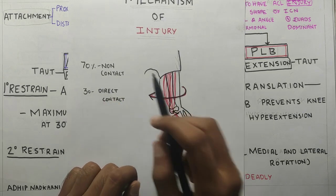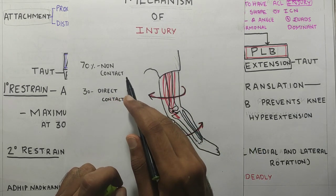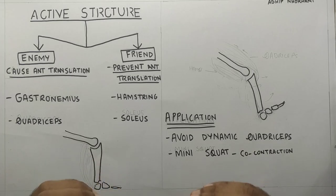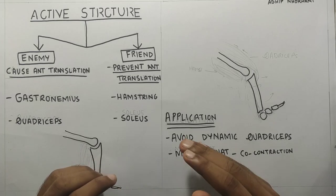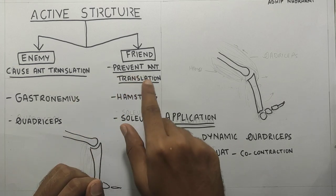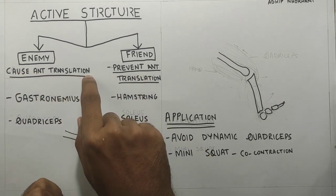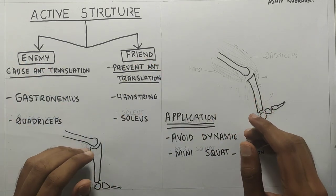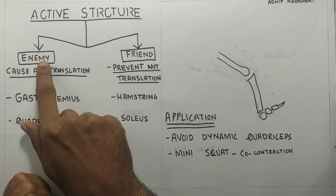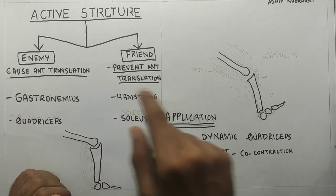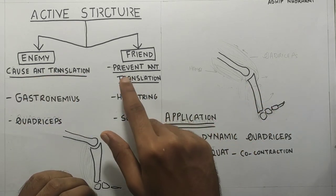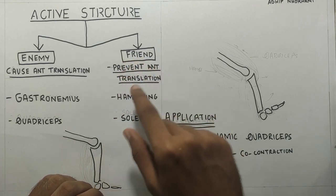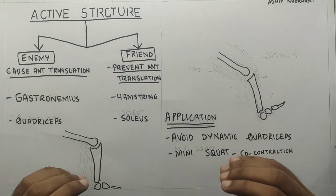70% of the mechanism of injury is non-contact injury whereas 30% is direct contact injury. Now let us discuss the active structures that prevent anterior translation and those that cause anterior translation — basically the enemies and friends of the ACL. The enemy of ACL causes anterior translation, stressing the ACL, whereas the friend of ACL prevents anterior translation, supporting it.